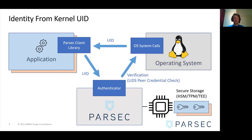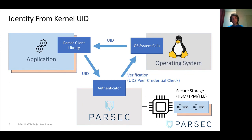One identity provider currently in Parsec uses Unix user ID. With that identity provider, applications making calls to Parsec provide their UID. To verify it, Parsec uses a feature on Unix domain sockets called peer credentials to make sure that the UID given in the request matches the actual UID of the process on the other end of the Unix domain socket. If they match, Parsec is sure the application is indeed who it claims to be, and uses that UID as identity to partition the key store.